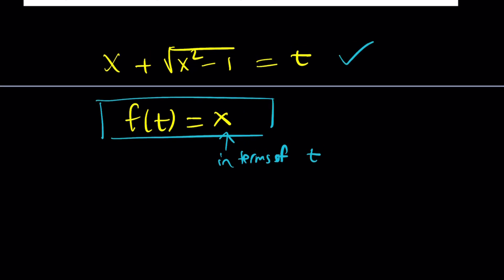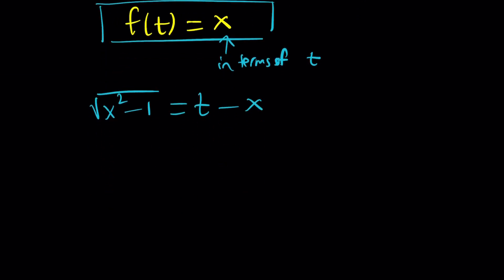So let's go ahead and solve for x from this equation. To be able to do that, I'm going to subtract x. So write this as square root of x squared minus 1 equals t minus x. And then, obviously, when you have radicals, you want to get rid of them, don't you? Let's square both sides. We get x squared minus 1 equals t squared minus 2tx plus x squared.